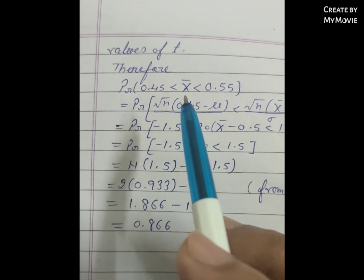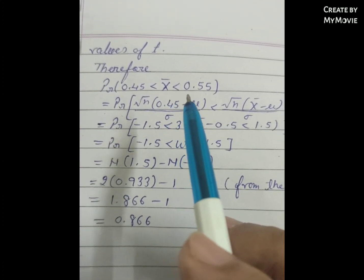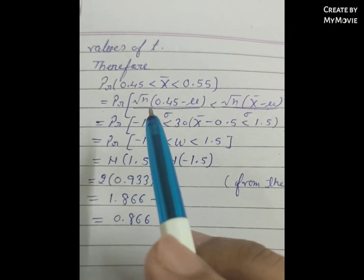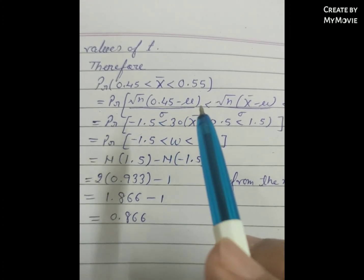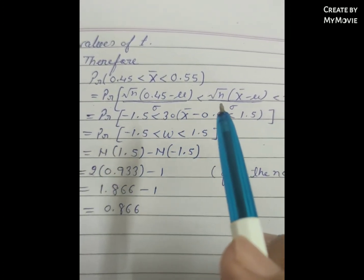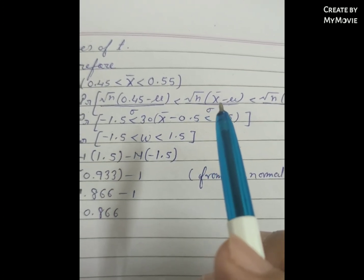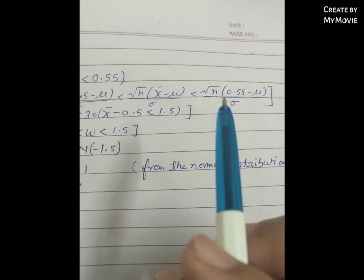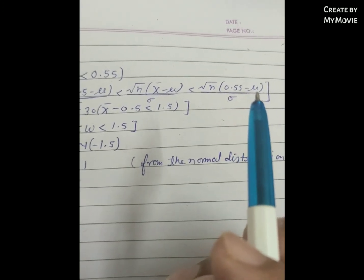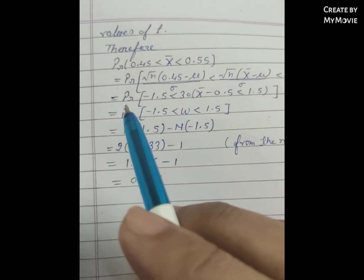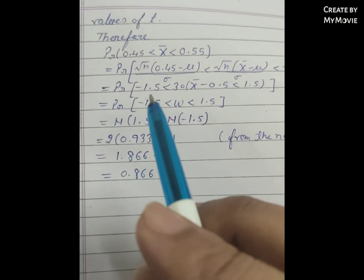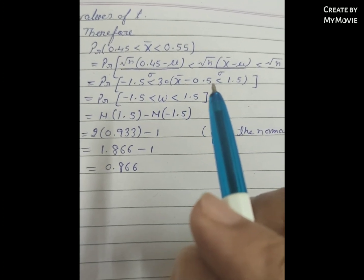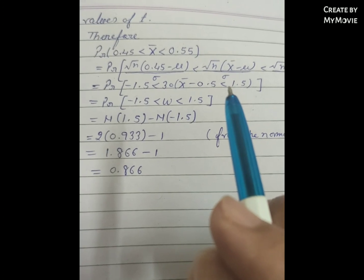Therefore, probability that 0.45 is less than x̄ is less than 0.55 equals probability that square root of n times (0.45 minus mu) upon sigma is less than square root of n times (x̄ minus mu) upon sigma is less than square root of n times (0.55 minus mu) upon sigma. This simplifies to probability that negative 1.5 is less than the standardized variable is less than 1.5.